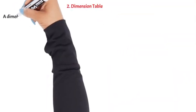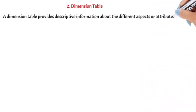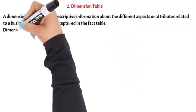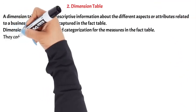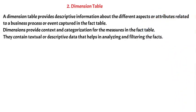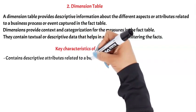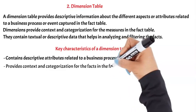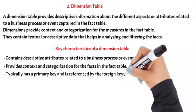A dimension table provides descriptive information about the different aspects or attributes related to a business process or event captured in the fact table. Dimensions provide context and categorization for the measures in the fact table. They contain textual or descriptive data that helps in analyzing and filtering the facts. Key characteristics of a dimension table: contains descriptive attributes related to a business process or event, provides context and categorization for the facts in the fact table, and typically has a primary key and is referenced by the foreign keys in the fact table.